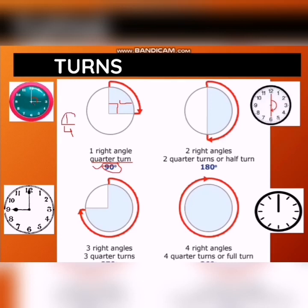Now, two quarter turns. We have one quarter turn and then a second quarter turn. Two quarter turns equal two right angles, which is also called a half turn.